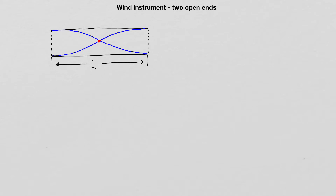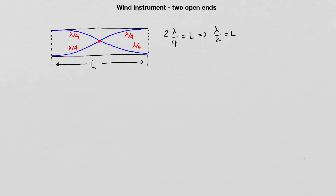From the form of the standing wave pattern, we can tell that each branch is a quarter of a wavelength. By simply counting the branches — one, two branches — we get the relationship to the pipe length: a quarter of a wavelength plus a quarter of a wavelength equals the length of the pipe, so half the wavelength equals L. Therefore, the wavelength of the first harmonic, λ₁, is equal to two times the length of the pipe.